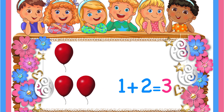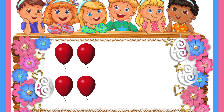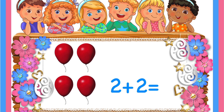Let's see another example. You have two balloons and your mom gives you another two balloons. So here the addition you are going to do is two plus two, which means you have two balloons and you are going to add another two. Let's count how many total balloons there are with you: one, two, three, four. So the answer is four.